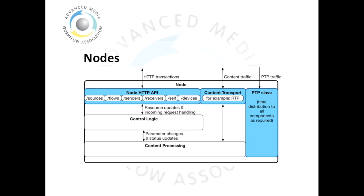Each node is logically constructed in the following way. Facing the network are a common node HTTP-accessible API, access to network transports such as RTP, and the node takes in a synchronization signal, in this case PTP. The Node API is made up of a number of resources which expose the aspects of the data model onto the network.